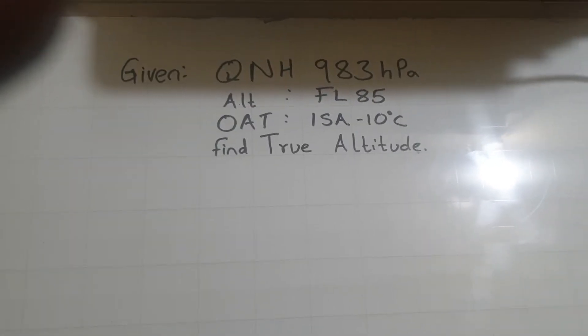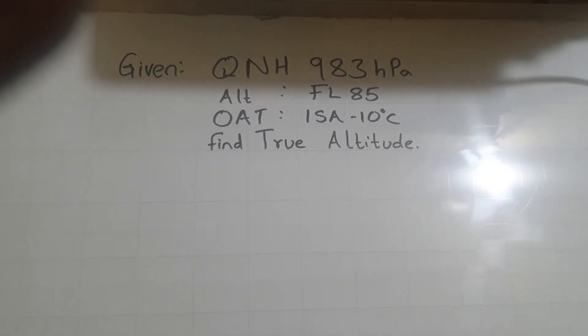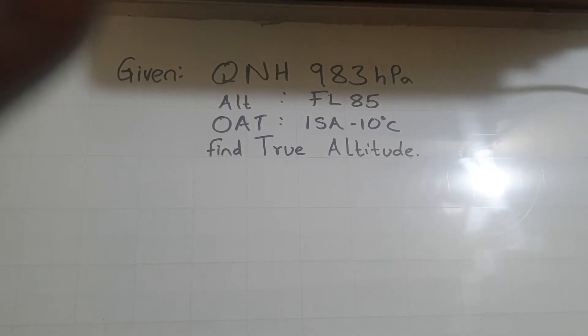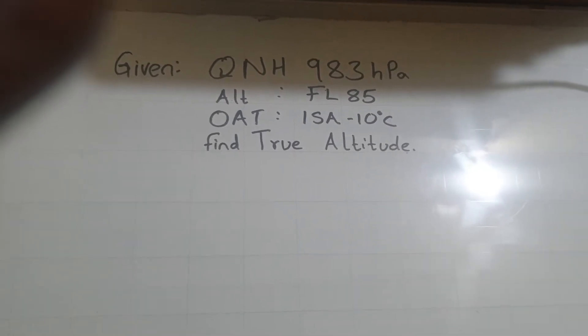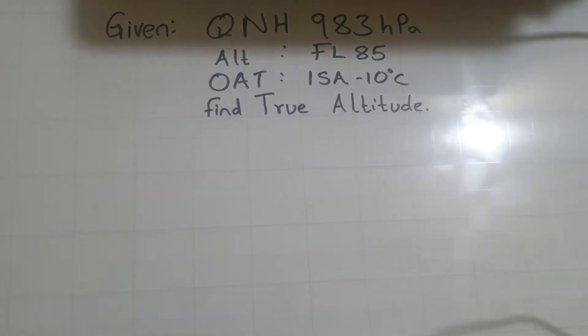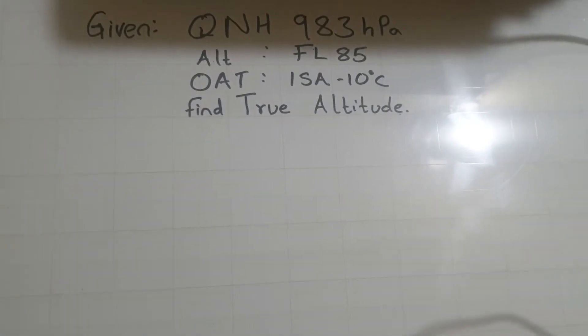Okay guys, so for number 27 we've been given the QNH, the pressure altitude which is 8,500, the outside air temperature which is minus 10. So just bear with me and set up the thing.